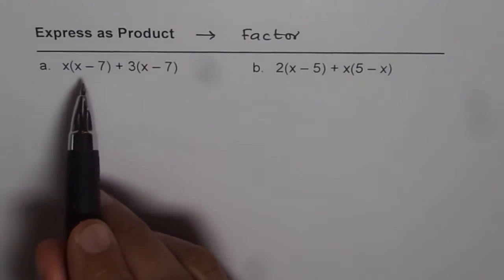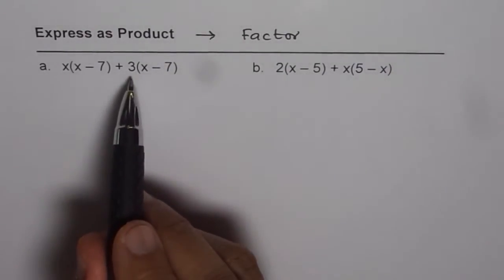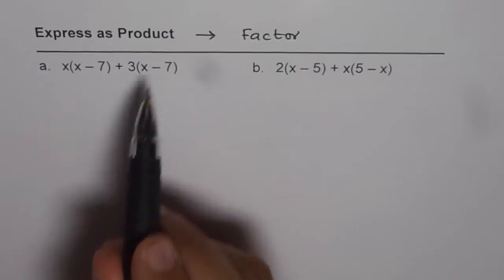Part A is x times x minus 7. So factors of the first term are x and x minus 7. For the second term, the factors are 3 and x minus 7.